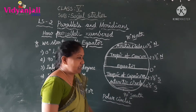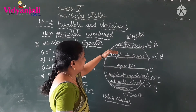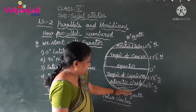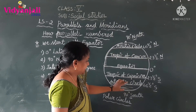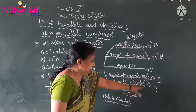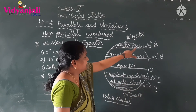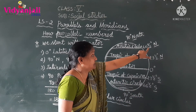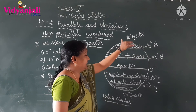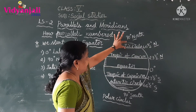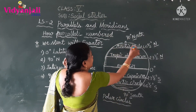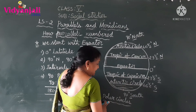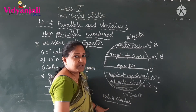One more point: the Arctic Circle and the Antarctic Circle — from 66 and a half degrees to 90 degrees in both the north and south — these parts are covered with snow and ice. That is why these regions are also called polar circles.